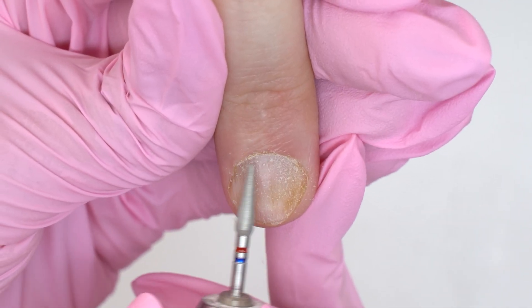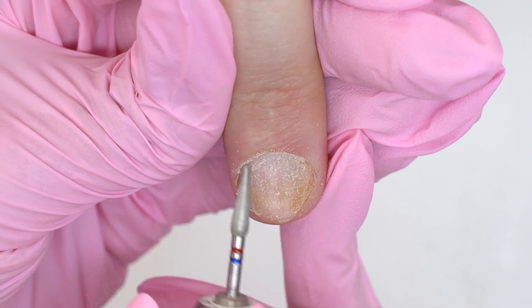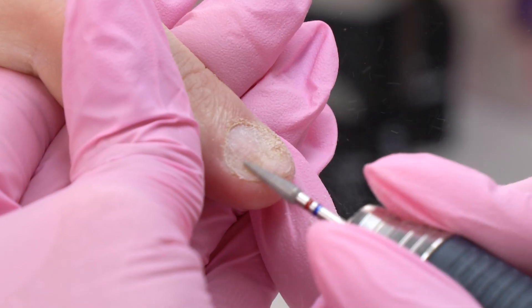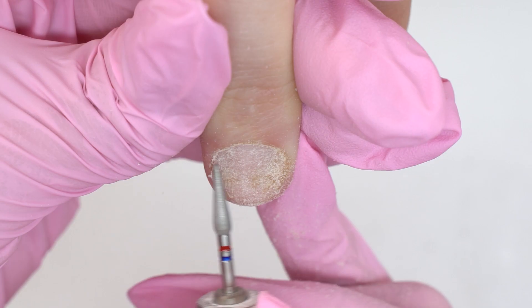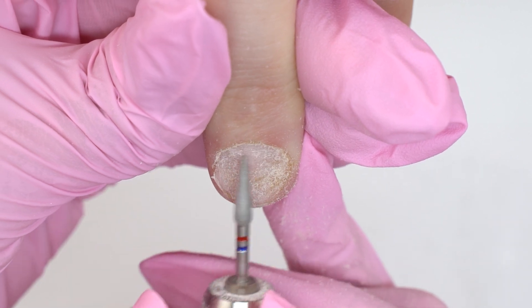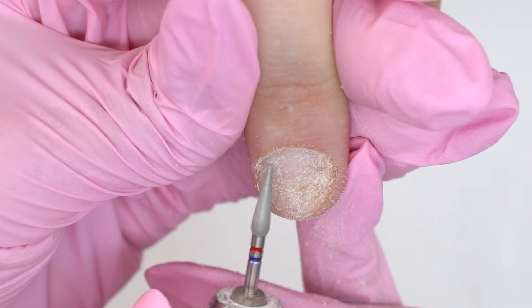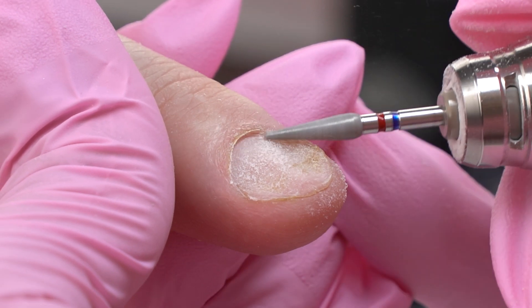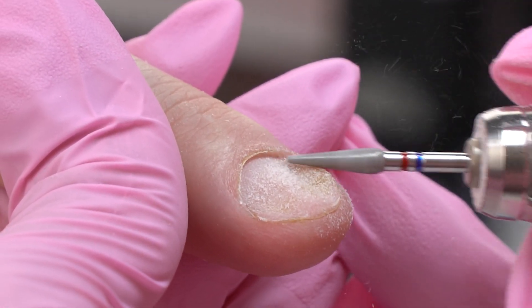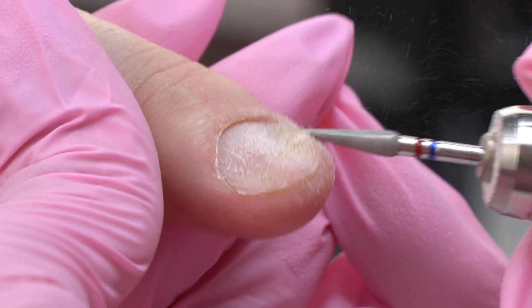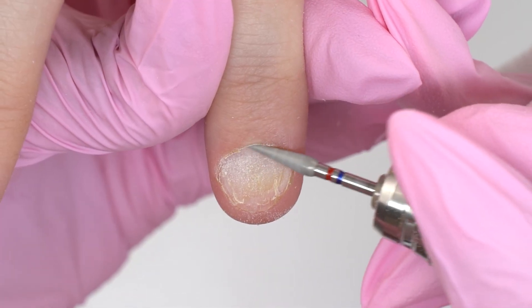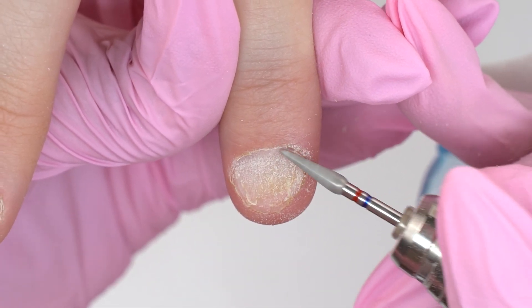I process it until it gets matte. I also lift up the cuticle and clean up the pterygium. There's not much cuticle here, so I just slightly lift it up without getting too deep. I will also clean up the cuticle with this drill bit. Well, these nails look different already.